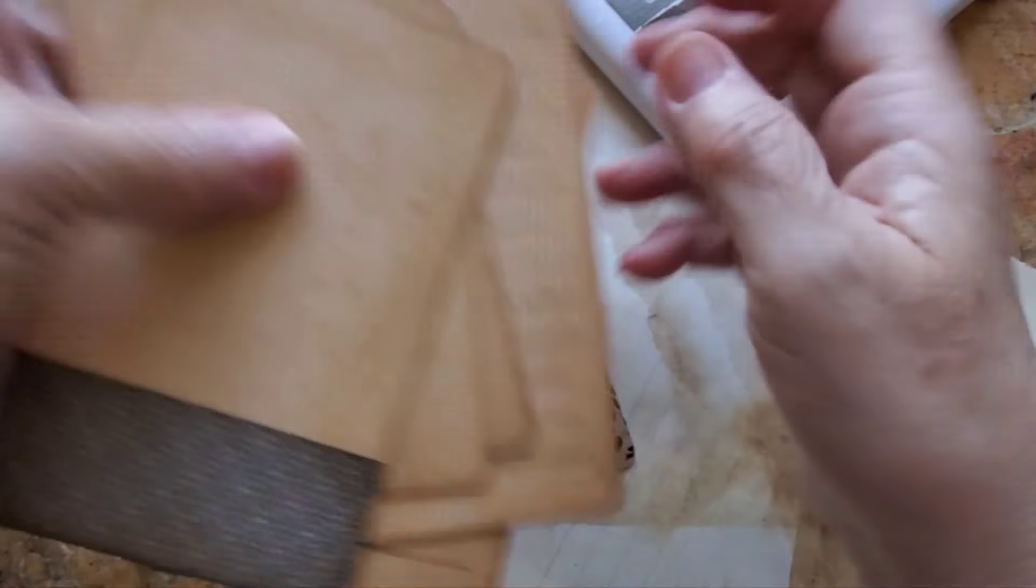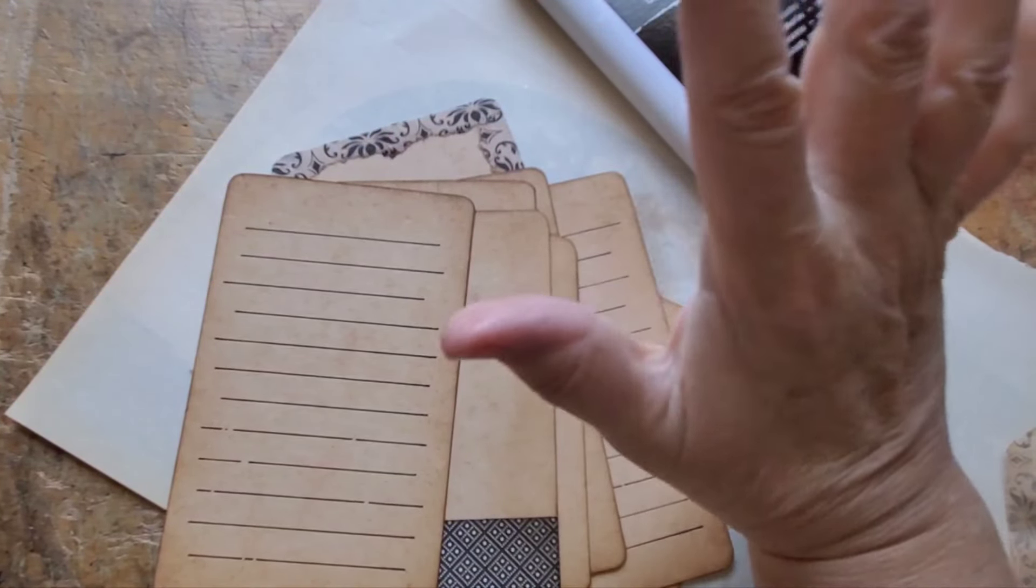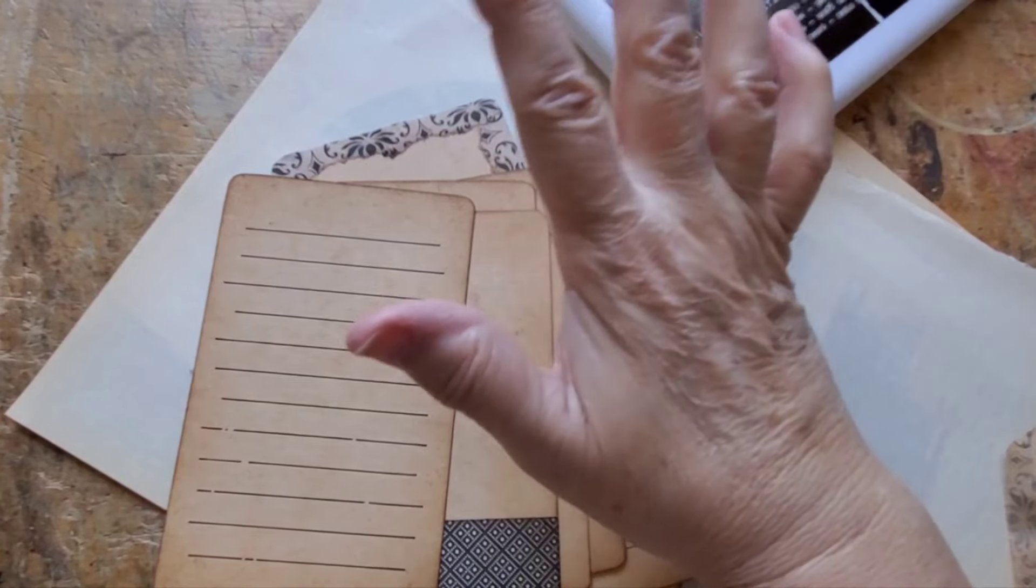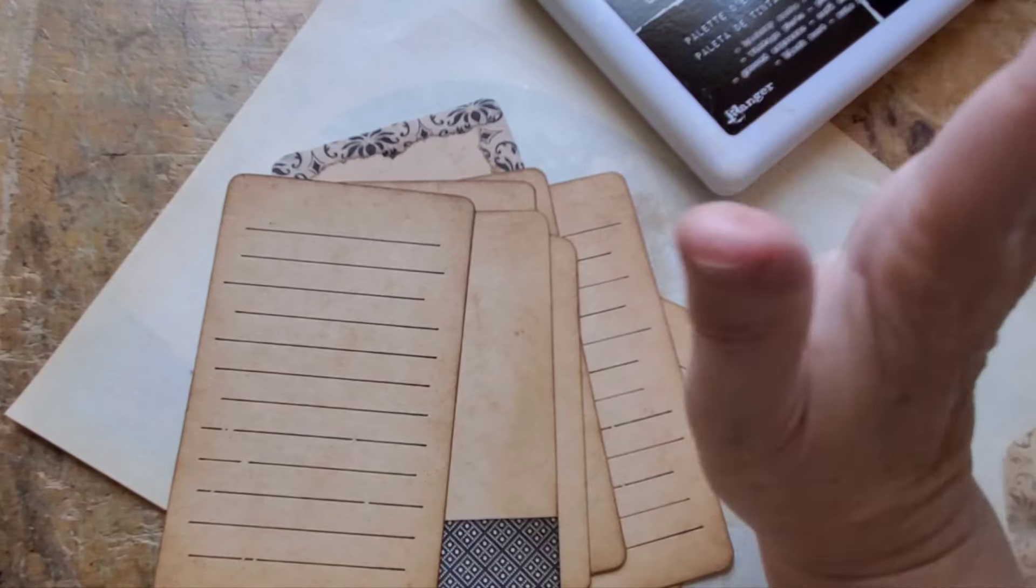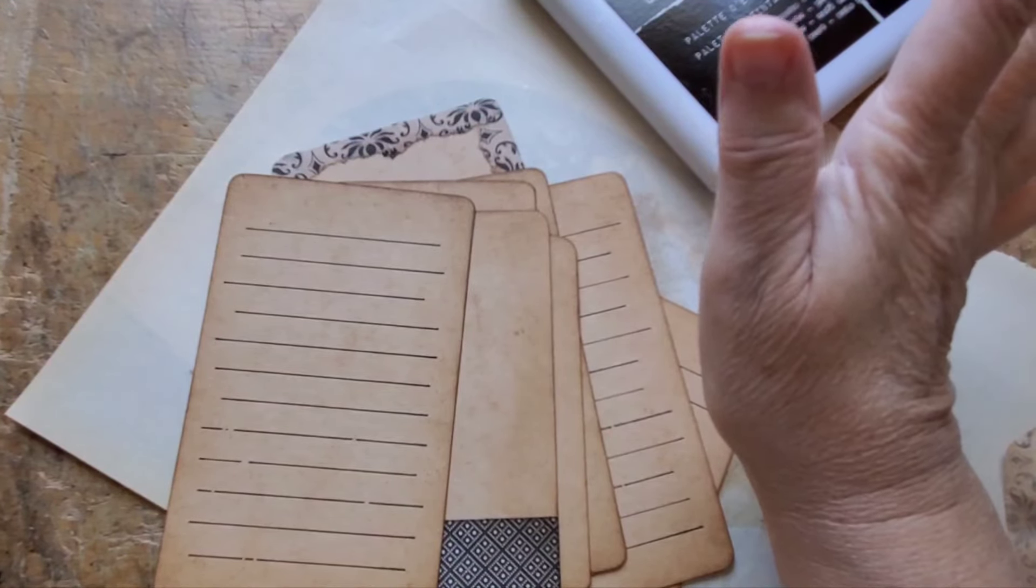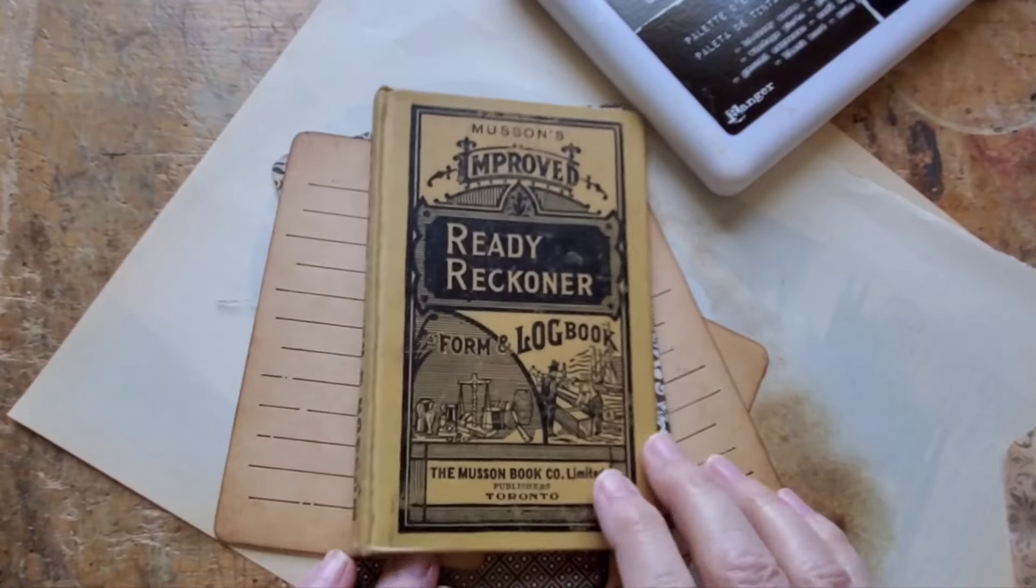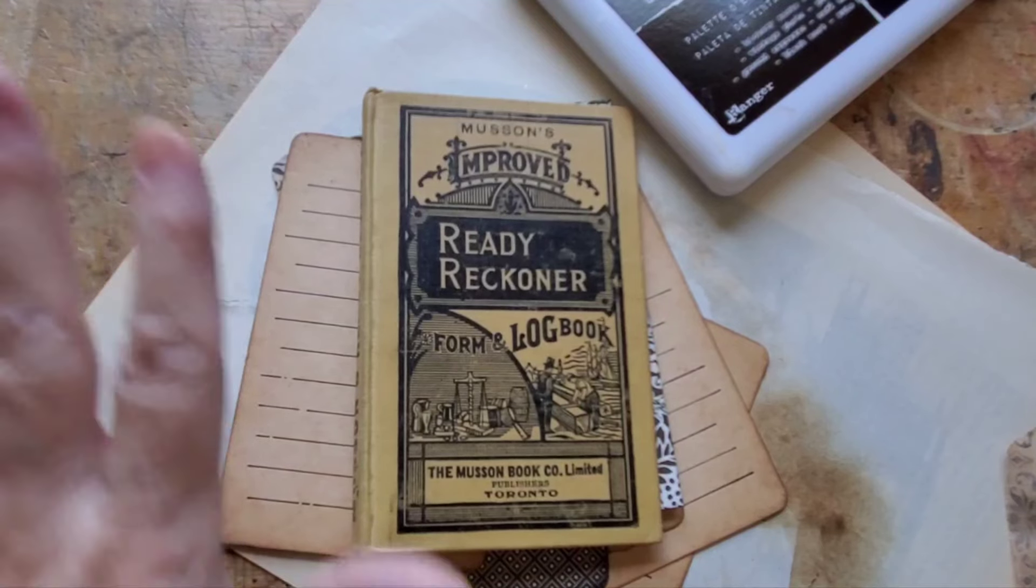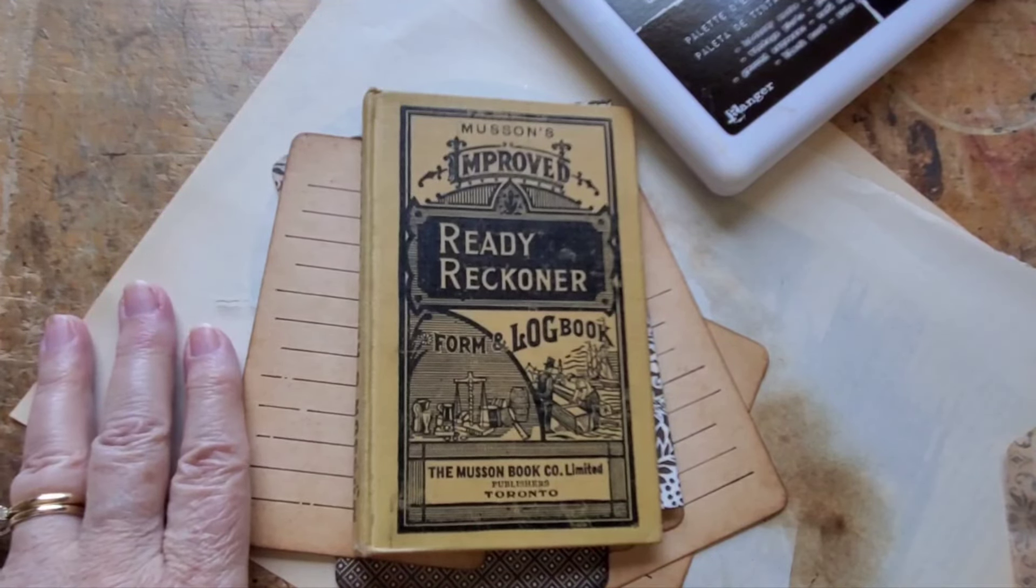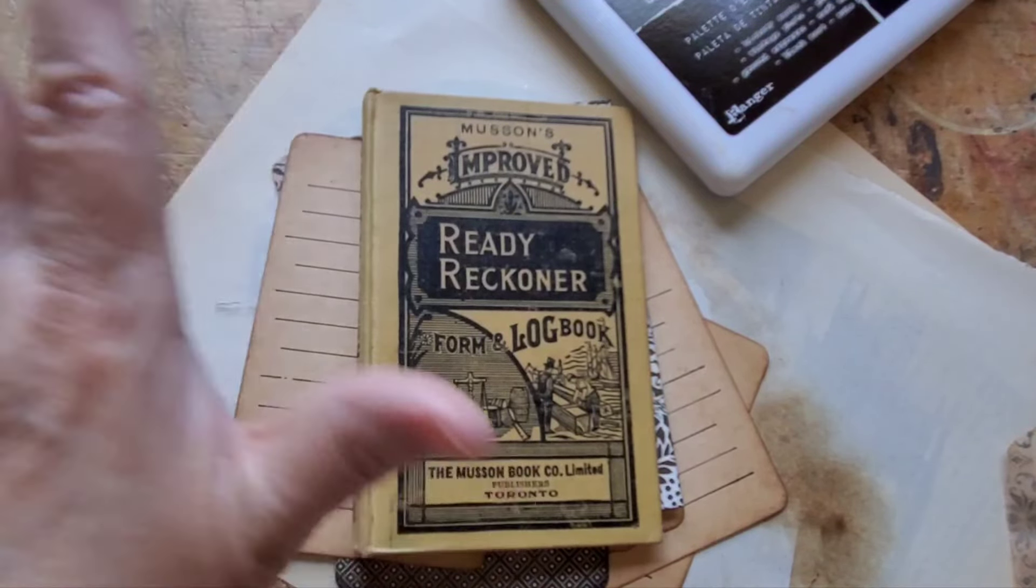All right so we've got these done but I'm going to do some, I think I might throw one or two scrapbook paper in just to throw the eye off and go oh where'd that come from, and I'll show you what I get done the next time we get together. So thanks for joining me and thanks for helping me along as I work on Musson's Improved Ready Reckoner Form and Logbook, pretty cool. Take care, have a great rest of your day and if you're celebrating Victoria Day have a great Victoria Day. Bye bye.